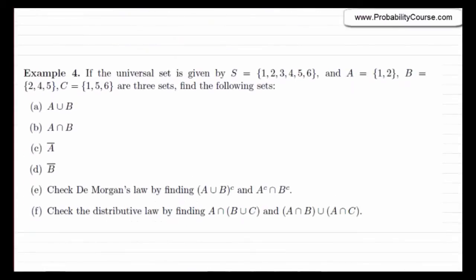Let's work on some examples to make sure you understand all of these. I suggest you stop the video and solve it before watching the rest. We have a sample space S, and sets A, B, and C. The first question asks what is A ∪ B. The elements in A are {1, 2} and B is {2, 4, 5}, so A ∪ B = {1, 2, 4, 5}. The second question is A ∩ B. The only element common to A and B is 2, so A ∩ B = {2}.